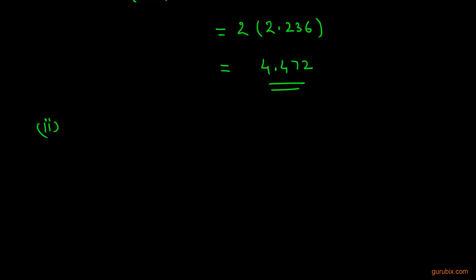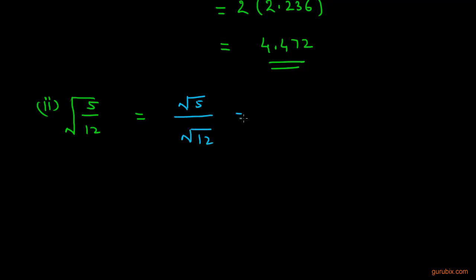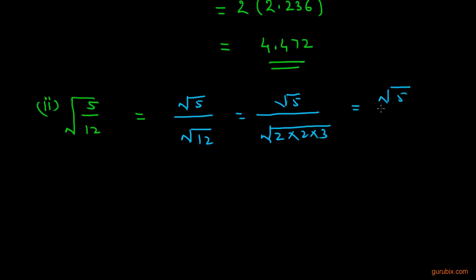In part 2 we have to find the square root of 5/12. We write this as √5 / √12, and factorize 12 as 2 × 2 × 3, so √12 = 2√3. The expression becomes √5 / (2√3).